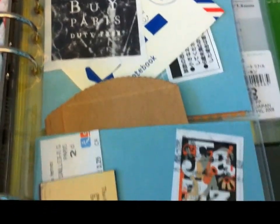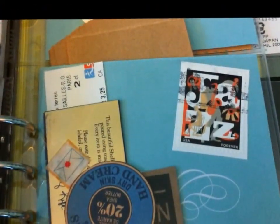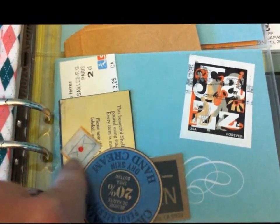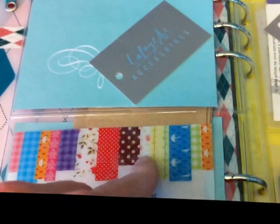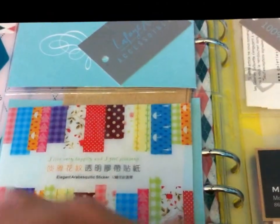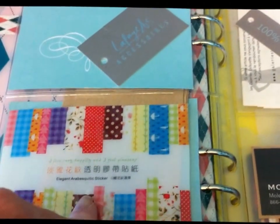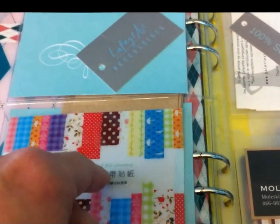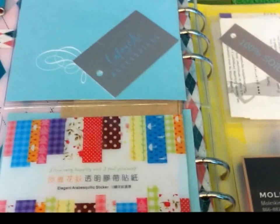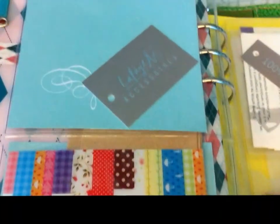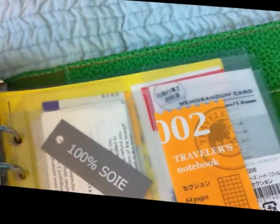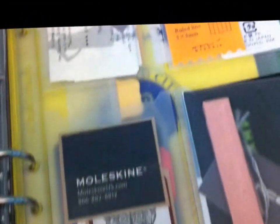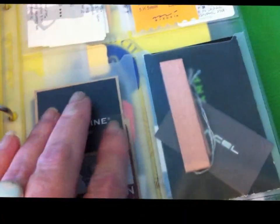These are just random pockets that I have all kinds of stuff in. Things I cut off of other things, labels and tabs. This was the front of something that stickers came in and I like this better, a lot better than I do some of the stickers actually. I just like the design. Here's some more of this kind of stuff.